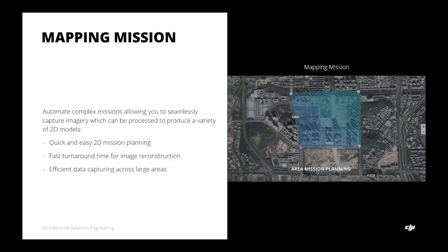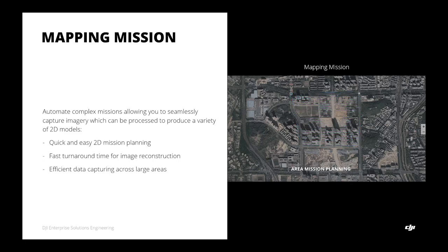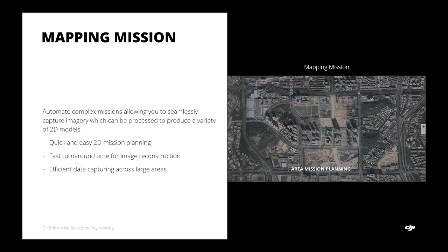Next we have mapping mission. Using DJI Terra, you can create a mapping mission directly by drawing the boundary of your mission area. DJI Terra will automatically create flight routes for the drone to fly. Once the mission is created, users just need to execute it, the drone flies automatically, and Terra shows the user a live video feed from the drone.